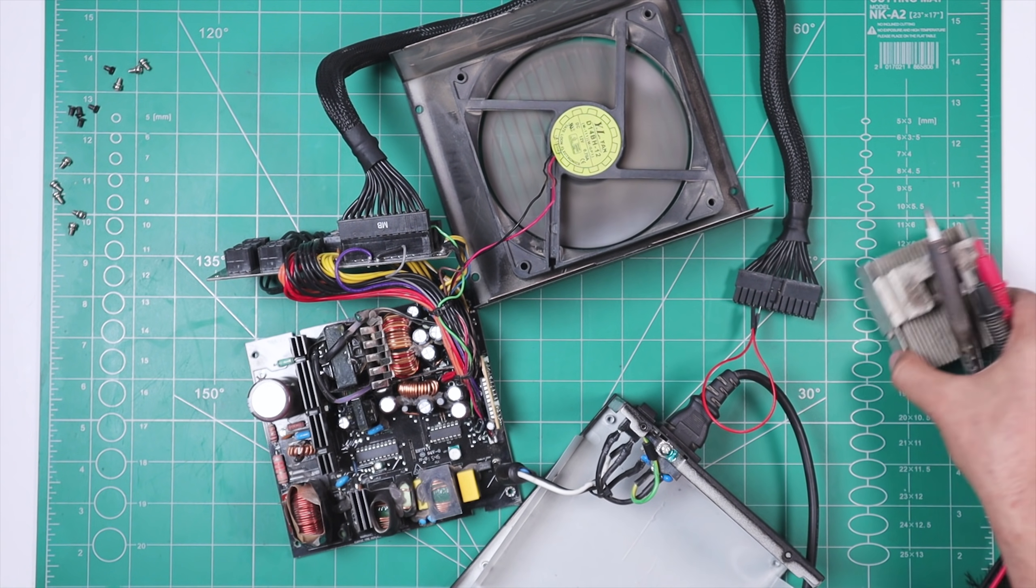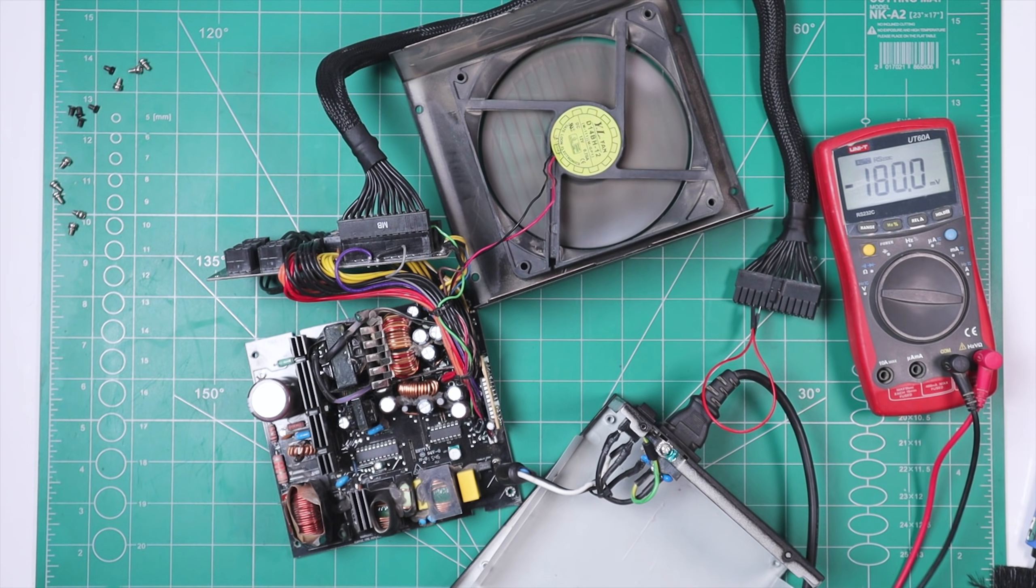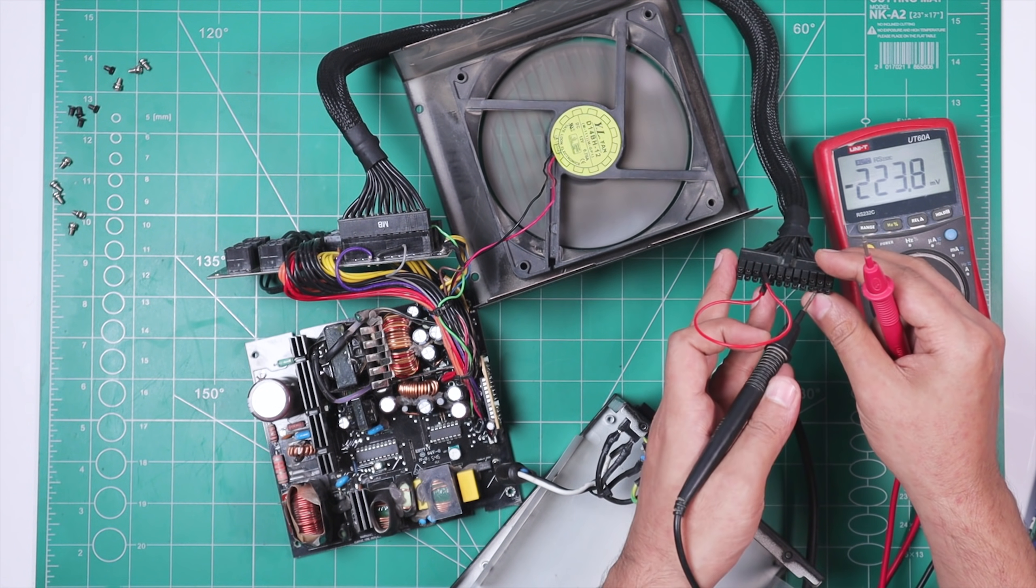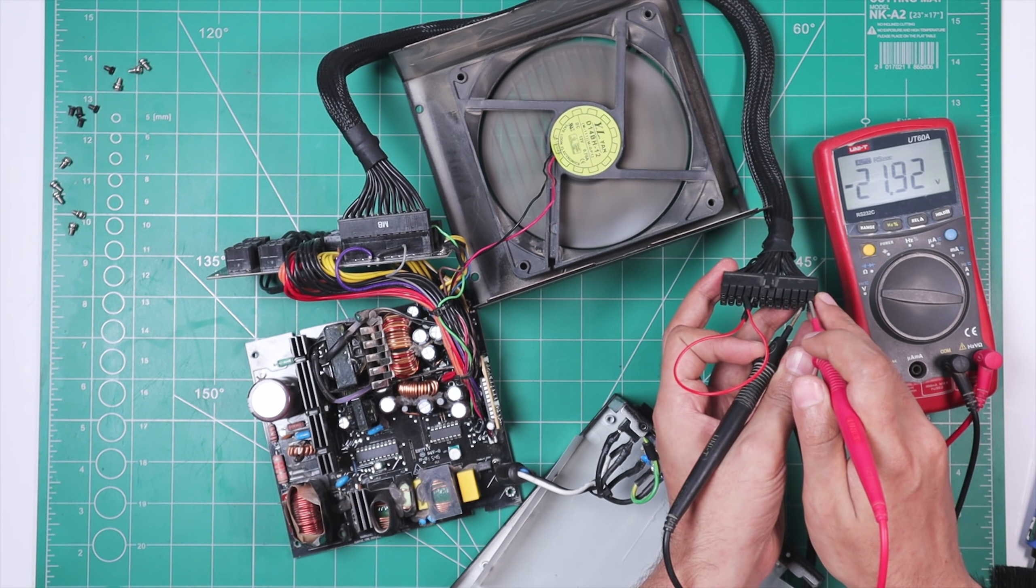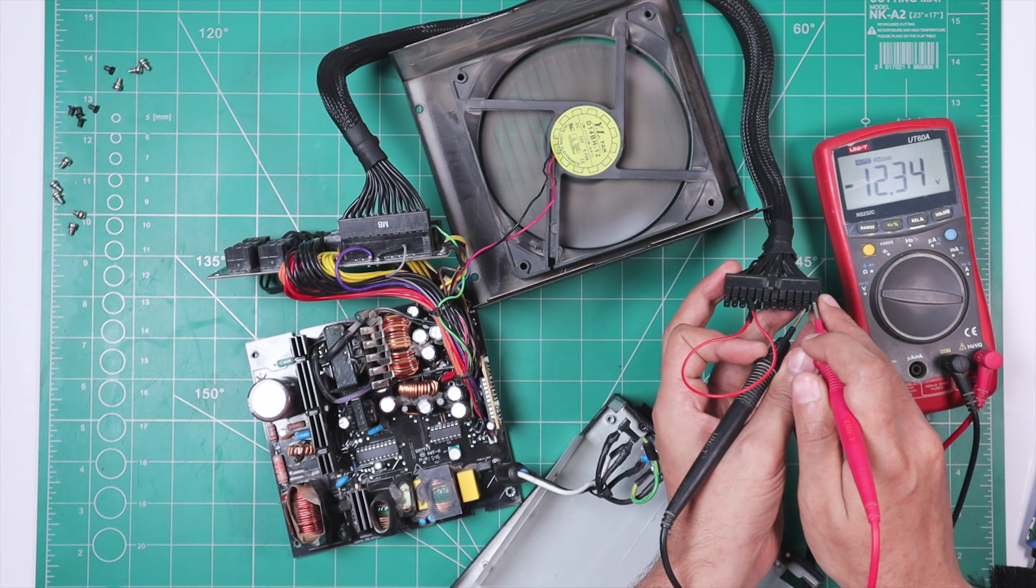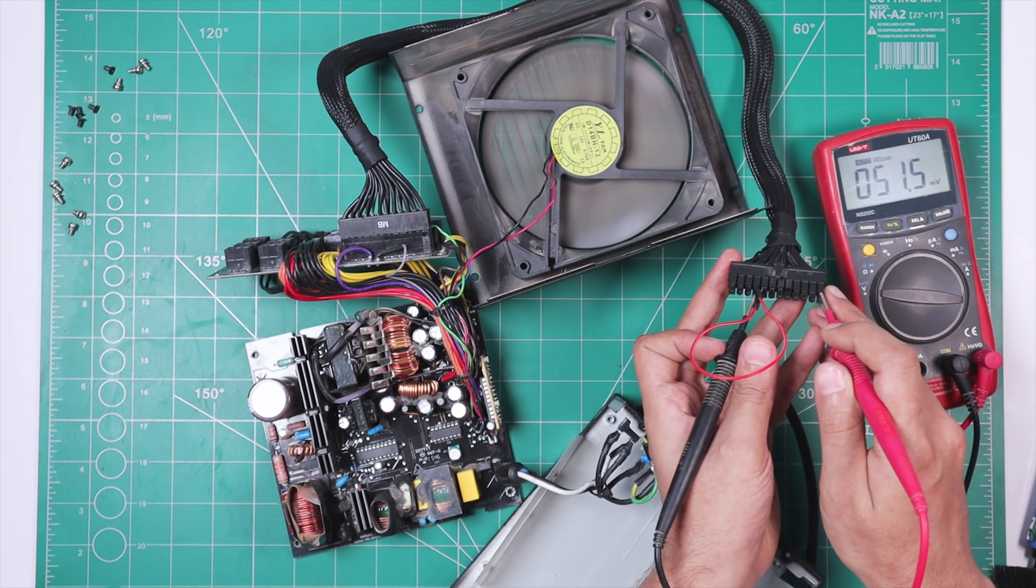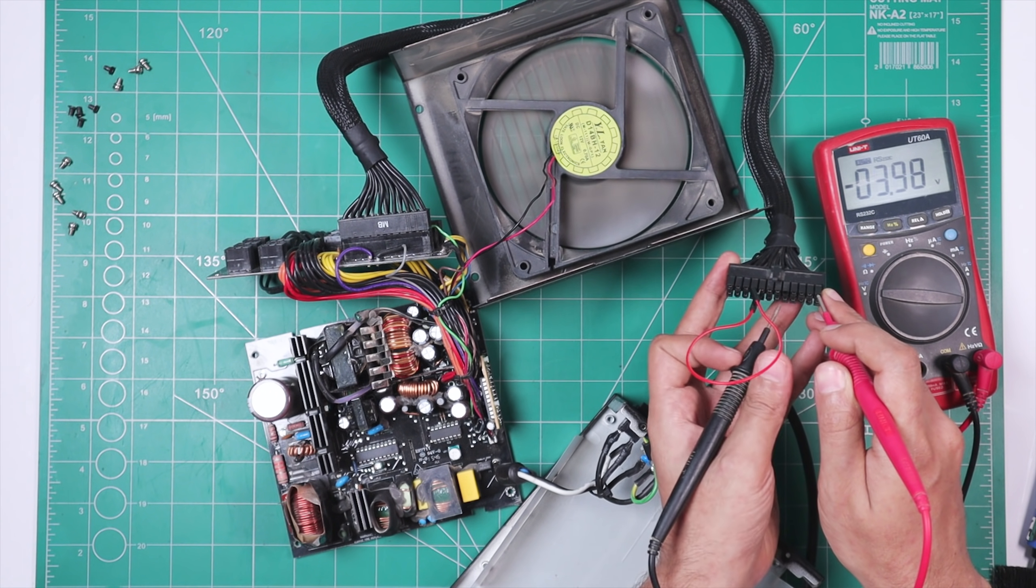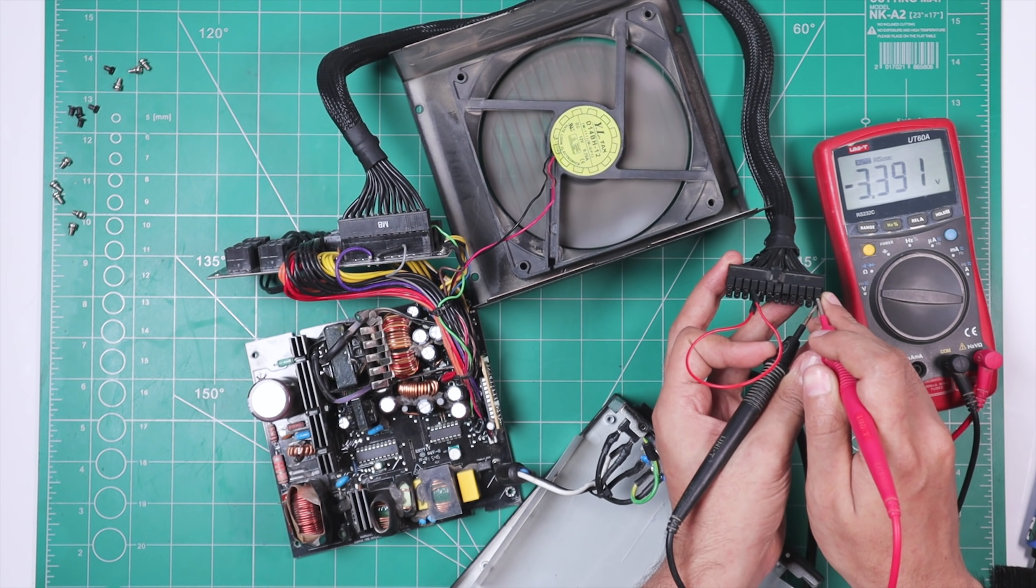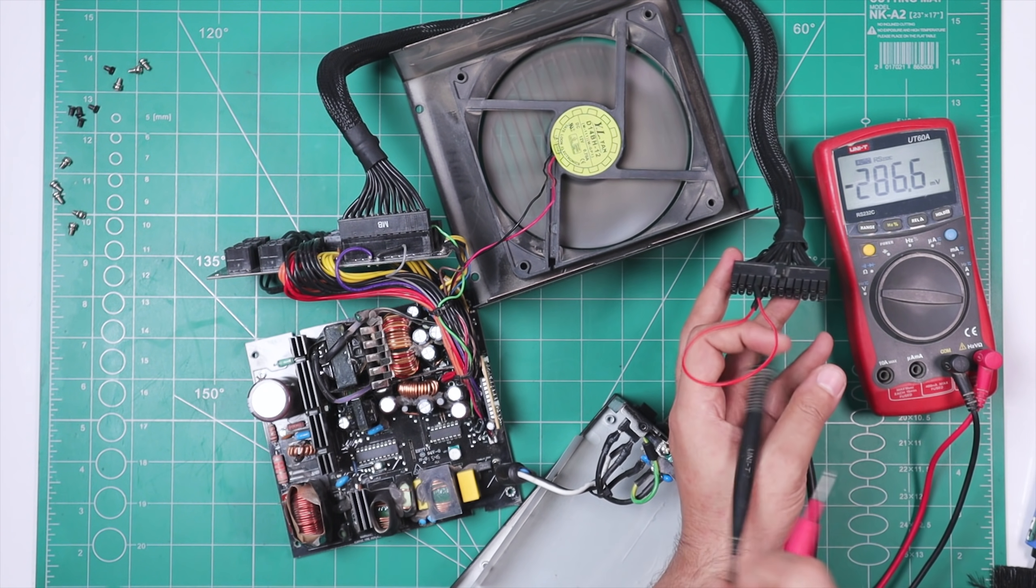And now let's just see if we're getting all the required voltages out of it. 12V is fine. 5V is fine. And lastly, 3.3V. Yep, all the voltage rails are working fine. Another successful and quite interesting repair, I must say.